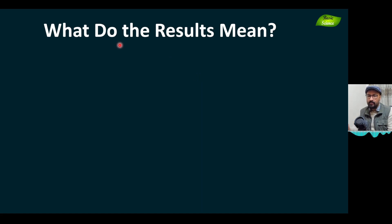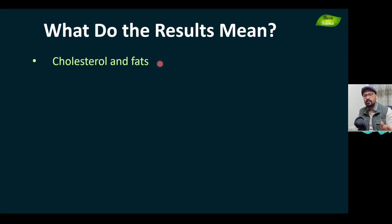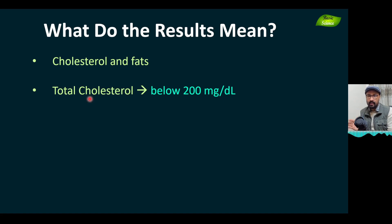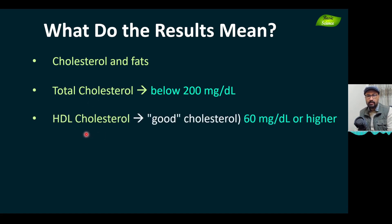What do the results mean? The test provides information regarding cholesterol and fats in the blood. It will tell you the total cholesterol — the limit is below 200 mg/dL. This reference value is generally for an adult male, though the normal range may vary depending on age, sex, and other factors.